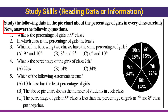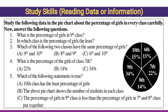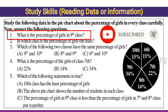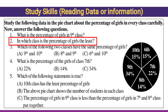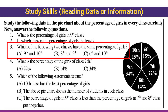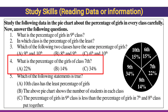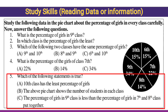Study the following data in the pie chart about percentage of goals in every class carefully, then answer the following questions. Don't worry — you will get all answers in the given study skill. First question: what is the percentage of goals in ninth class? Ninth class: 34 percent. Second question: in which class is the percentage of goals the least? Eighth class: 14 percent. Third question: which two classes have the same percentage of goals? Sixth and tenth, both 15 percent — option C is absolutely right. Fourth question: what is the percentage of goals of class 7? Class 7: 22 percent, option A is right.